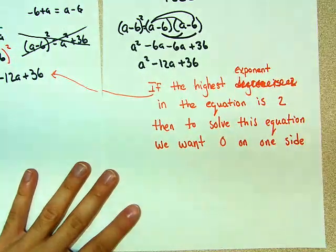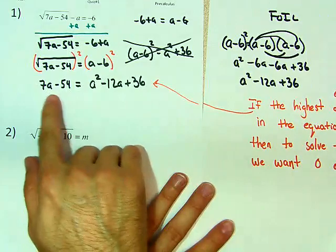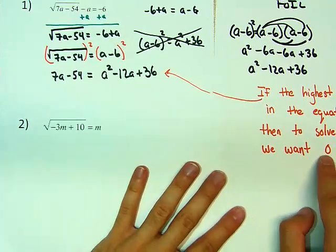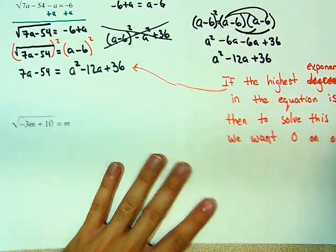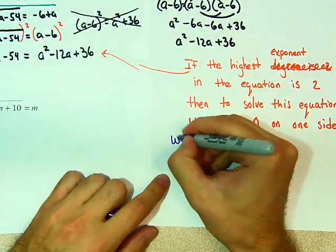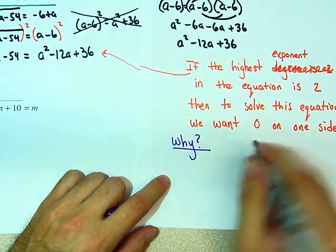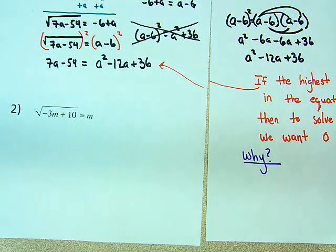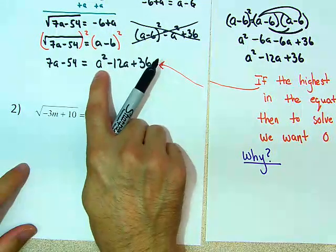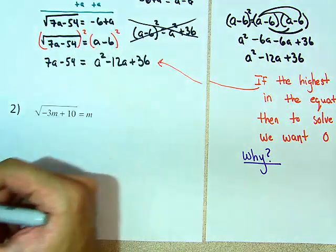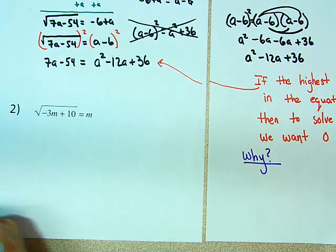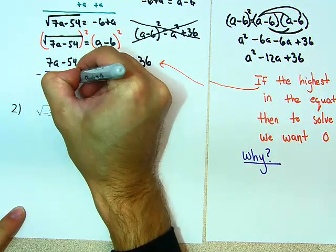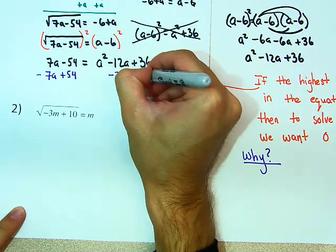Always, always, always, always. We have done this so many times. You see here, the highest exponent is 2. We want 0 on one side. So the next question will be, why? Let's get 0 on one side. So how do you do it? This a squared is already here. So let's take this other stuff and put it on the other side. So this is minus 7a plus 54. Minus 7a plus 54.